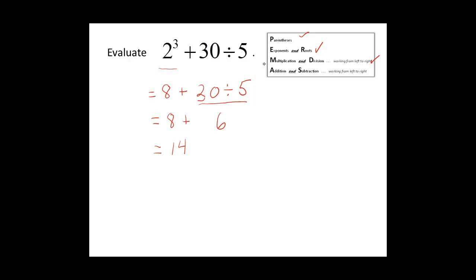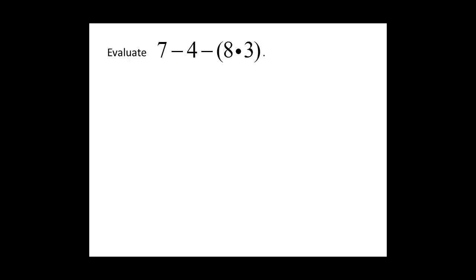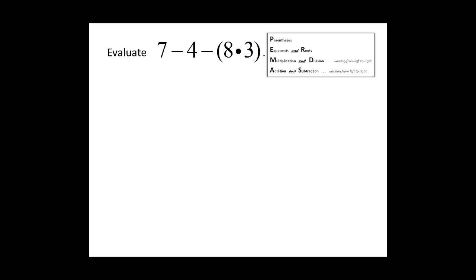Eight plus six is equal to fourteen. As you work down, you will see that each line of this problem equals the previous line. Our next problem is seven minus four minus the product of eight times three. We will start with parentheses. Eight times three is equal to twenty-four.